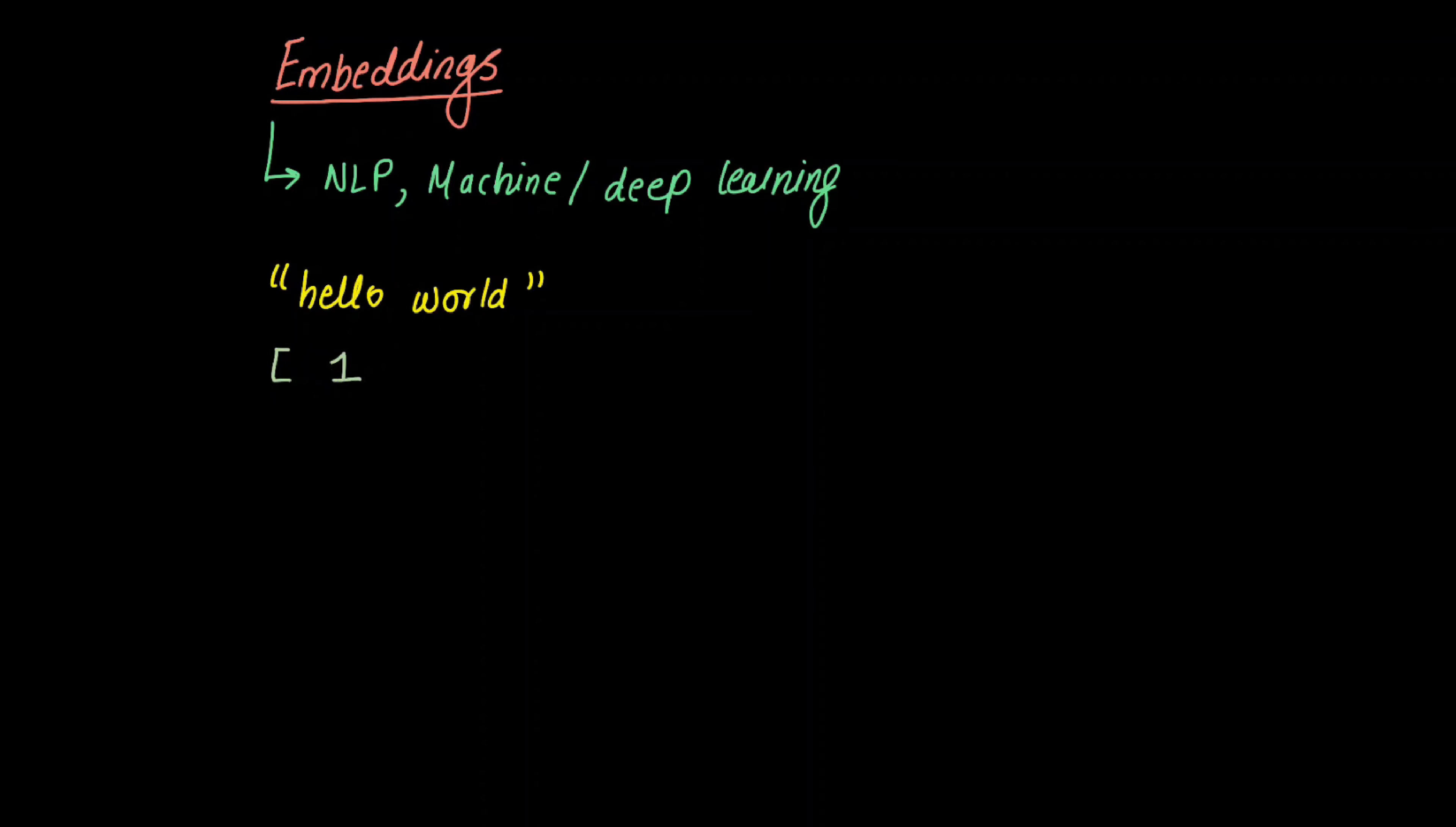So how do we make computers understand the context of what "hello world" represents? In order to do that we have to find a way through which we can numerically represent it. So let's say we represent this string through a series of an array. Let's say I give 1 just because we have "hello" in it, and I give another 1 because we have "world" in it.